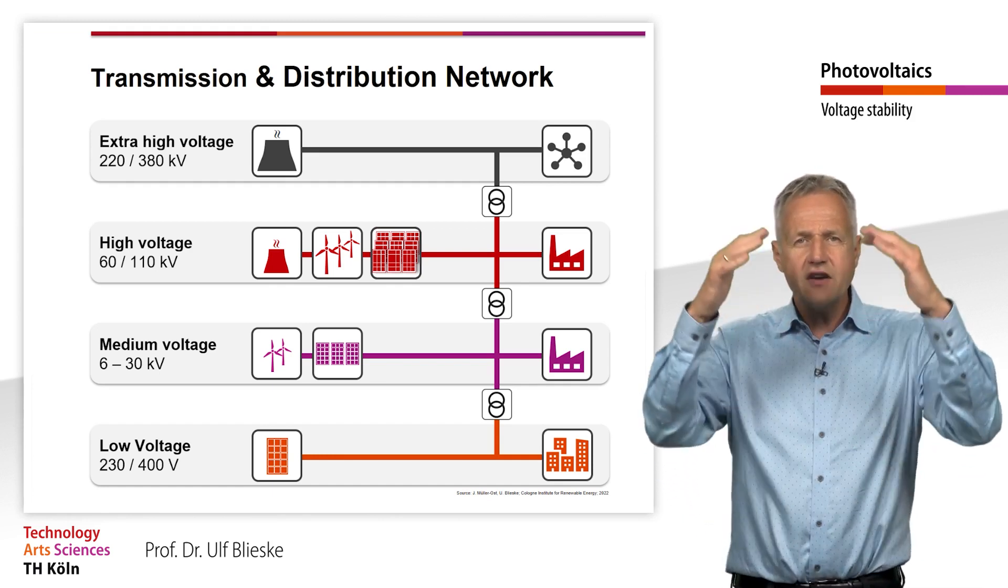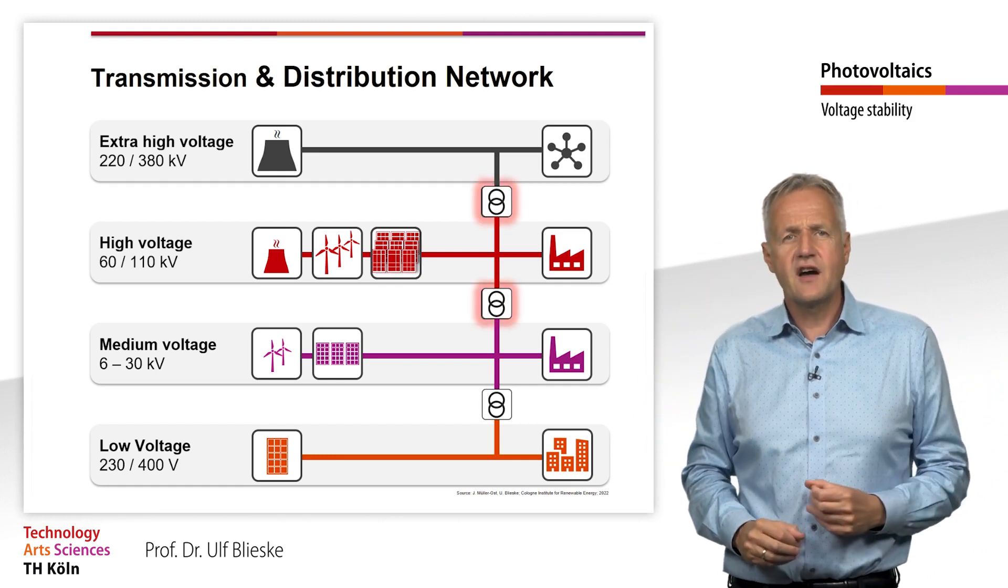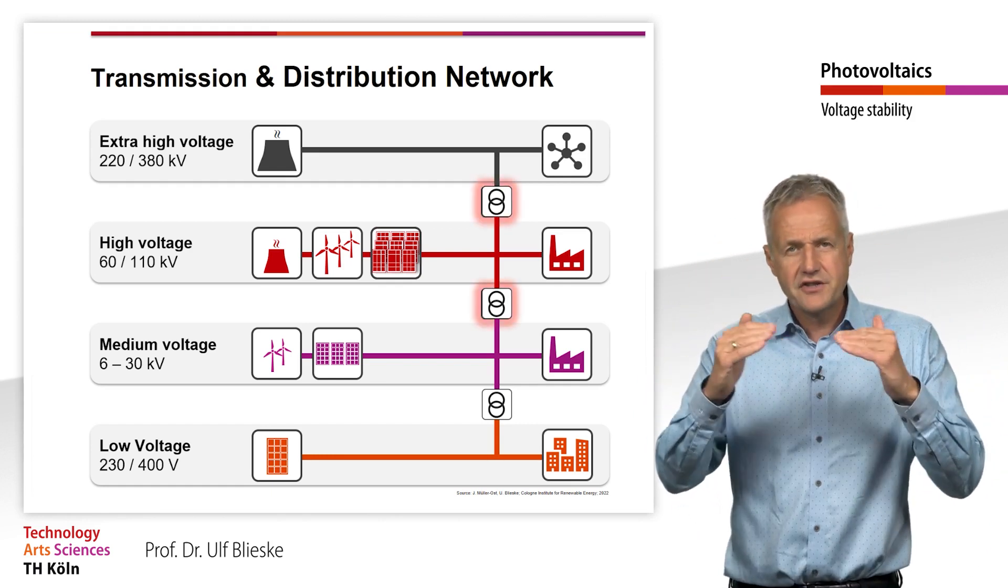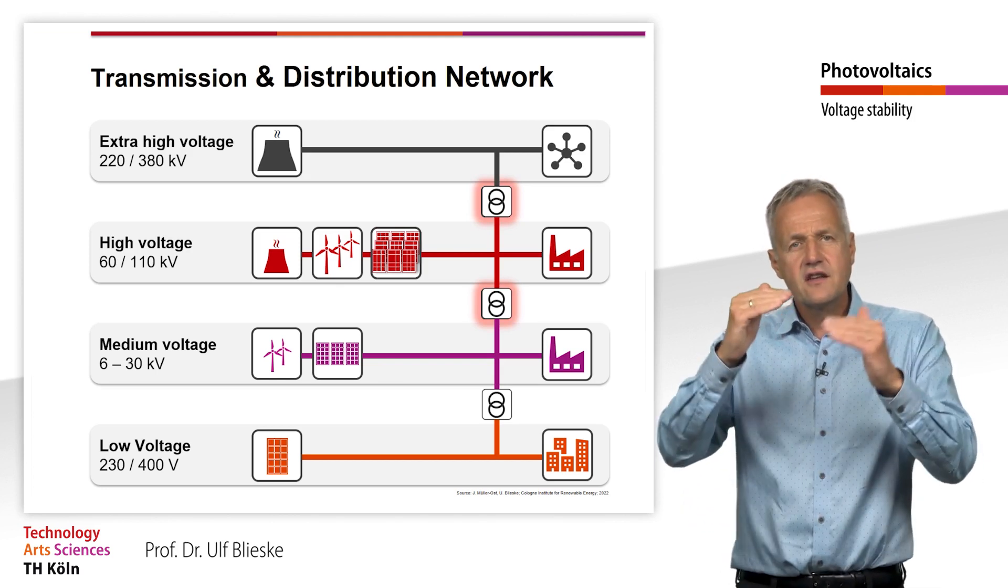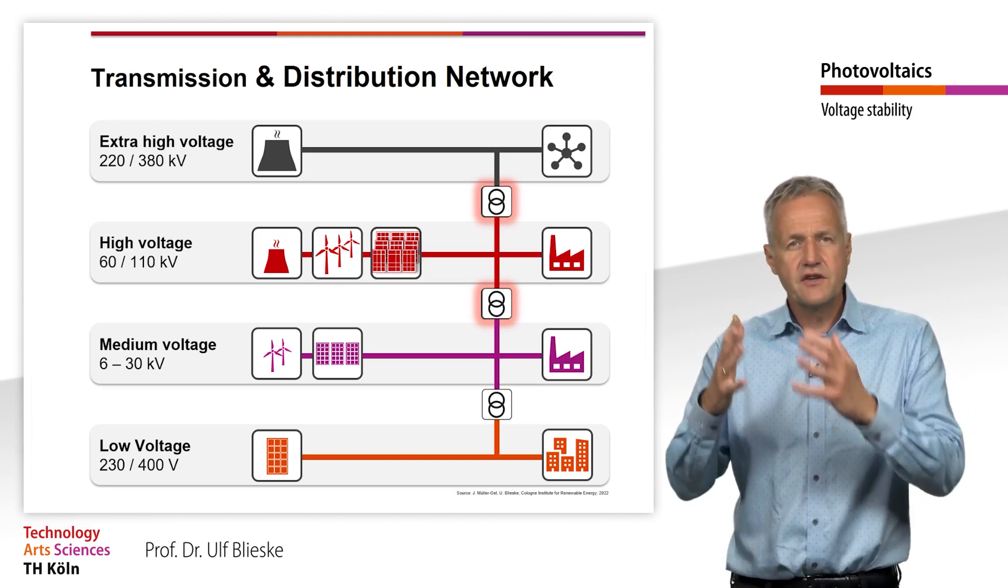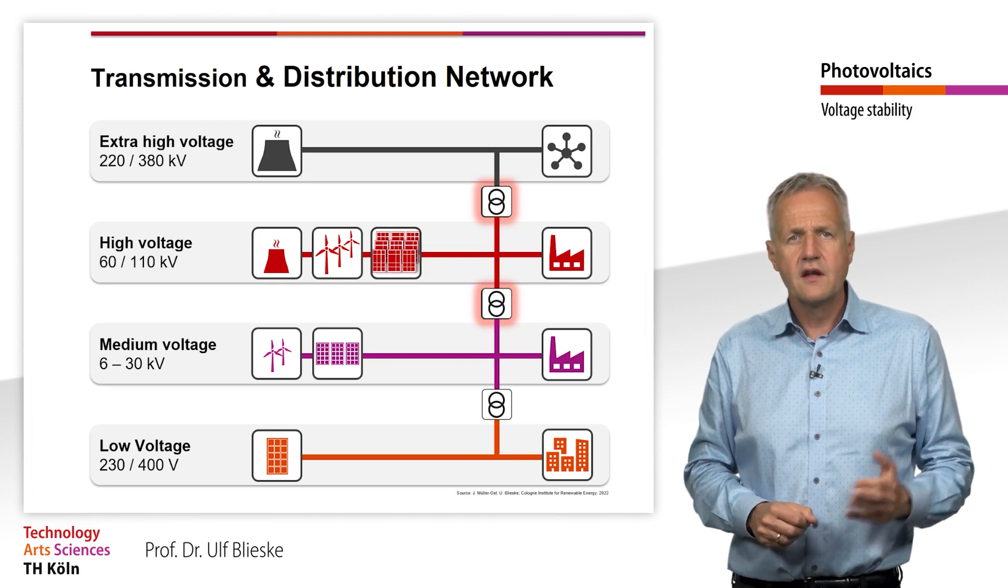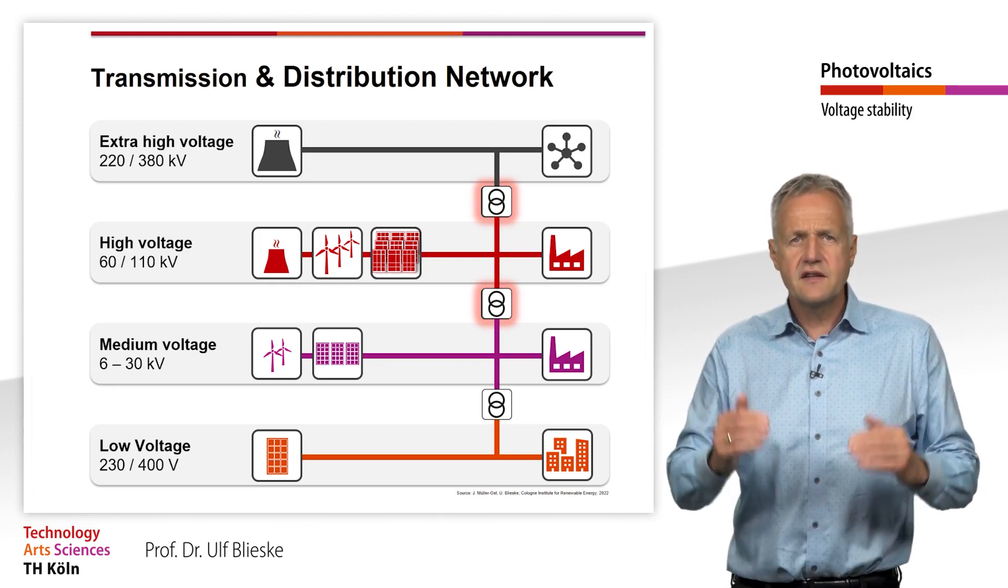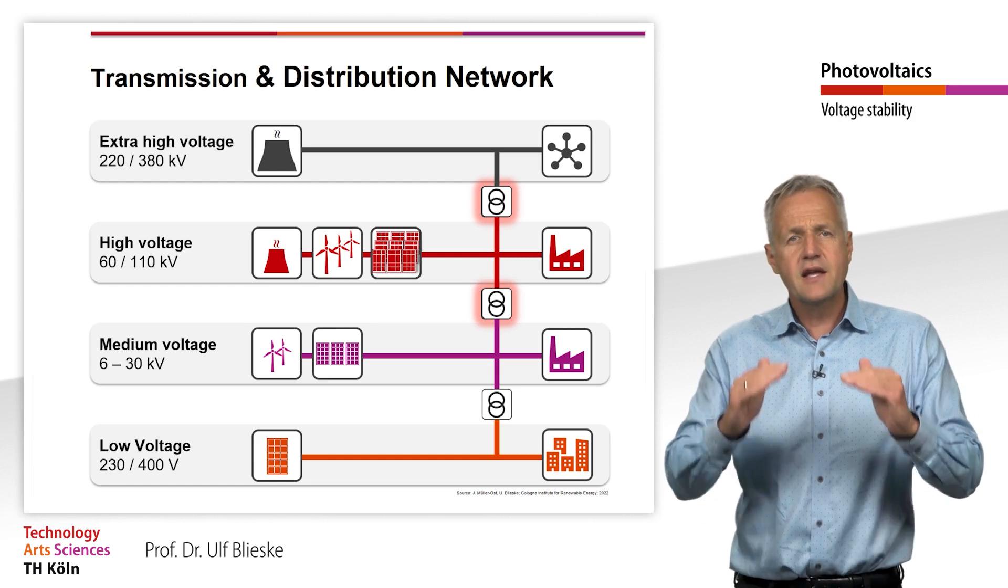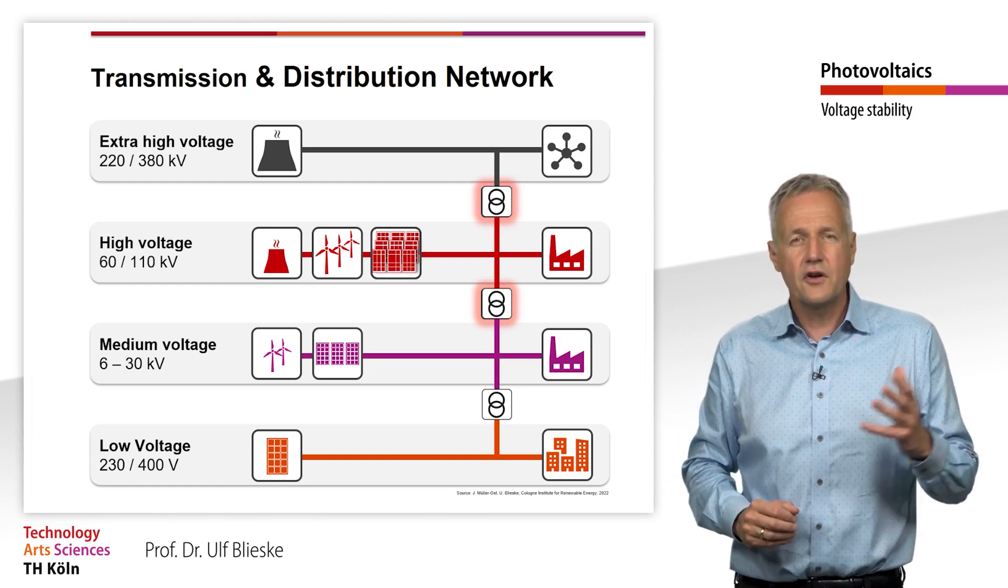From extra high voltage to medium voltage, the substations are each equipped with regulators that can adjust the transformation ratio between two voltage levels. This means, for example, that the voltage on the medium voltage side can be kept approximately constant even though the voltage on the high voltage side fluctuates due to wind feed-in.